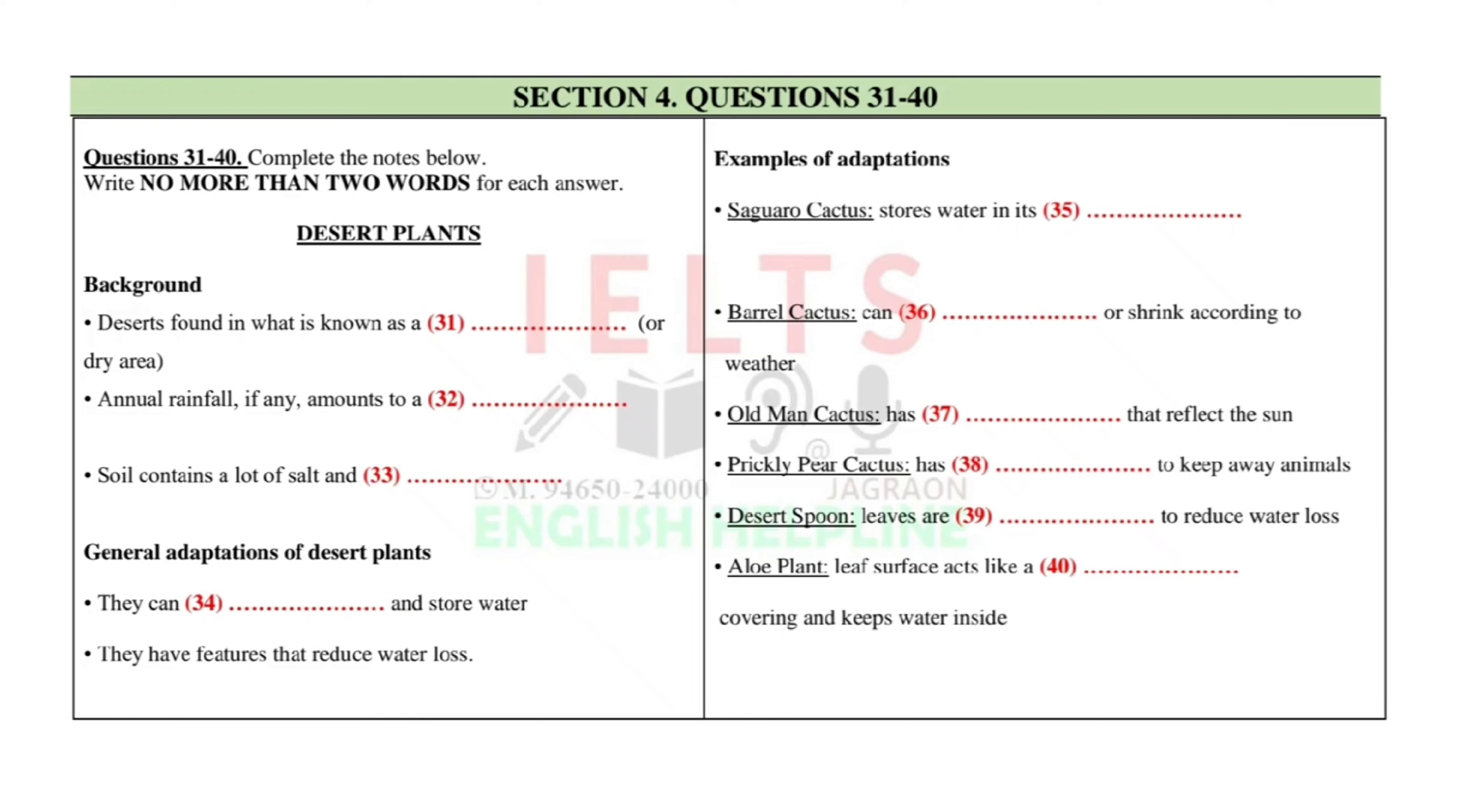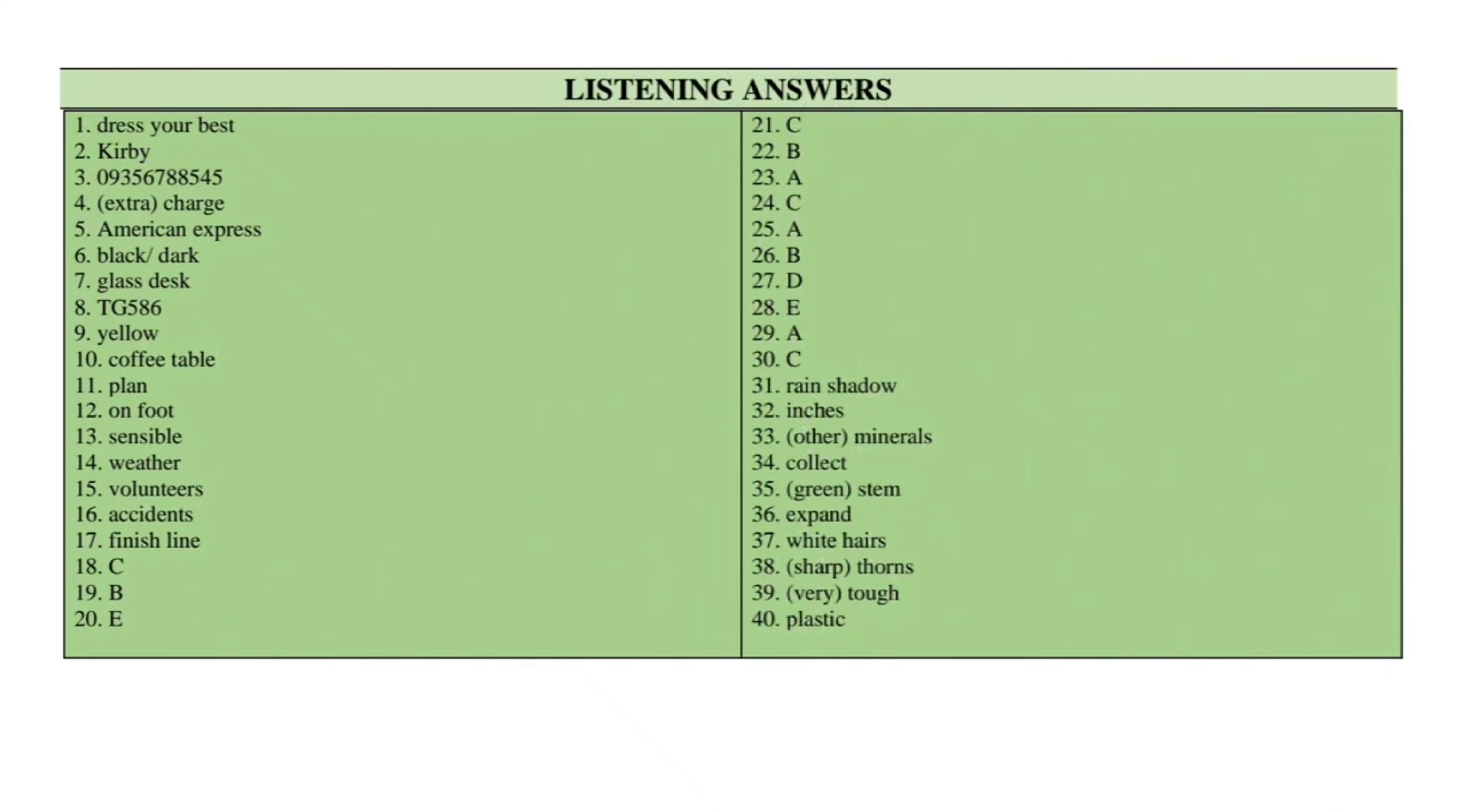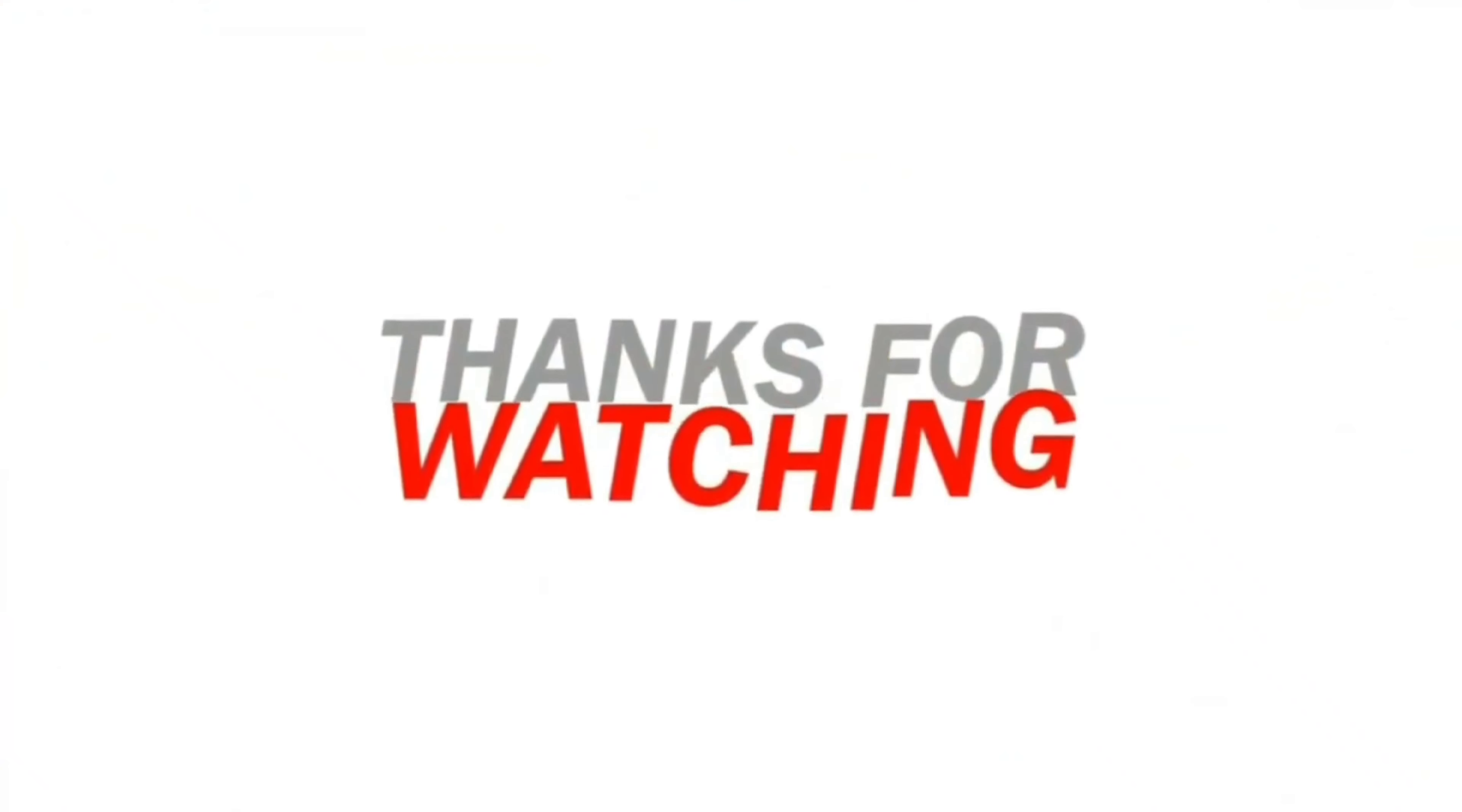Finally, we come to the aloe plant. This is one that many people keep in their homes. It's an attractive plant, which has leaves that look and feel rather waxy. This surface behaves in a similar way to a plastic wrapper and helps the plant to hold the water in. It's a wonder plant, this one. Its juice has been used as a medicine for centuries, and even today you can find it in products on the pharmacists' shelves or in creams and lotions. OK. Well, we're going to take a closer look. You now have half a minute to check your answers.